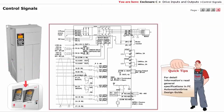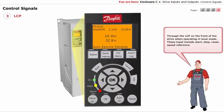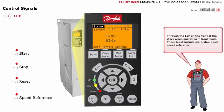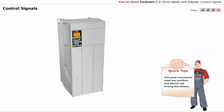For detail information, read general specifications in FC automation drive design guide. Third, through the LCP on the front of the drive when operating in local mode. These input include start, stop, reset, speed reference. The most commonly used are Profibus and DeviceNet among the others.